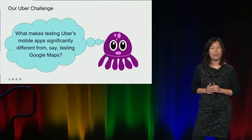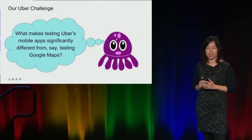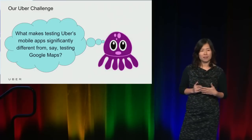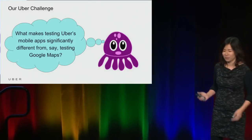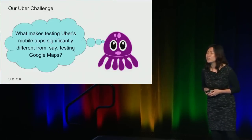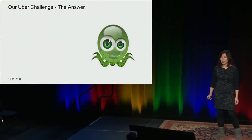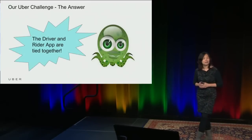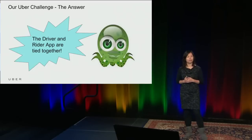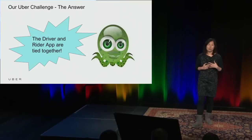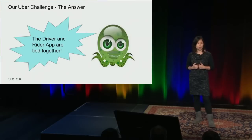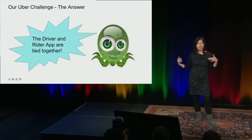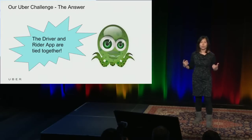So after my previous hint, can you guess the answer to my question? What makes testing Uber's mobile apps significantly different from, let's say, testing Google Maps? Two apps — yes! So what's our Uber challenge? The driver app and the rider app are tied together. This is one of the first challenges we faced when investigating UI testing tools for automating the sanity test scenarios for the mobile org at Uber. We found that many of the scenarios require the rider app and the driver app interacting closely with one another in order to complete the scenario.